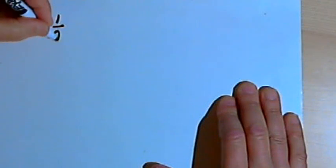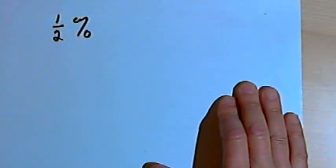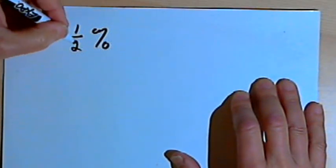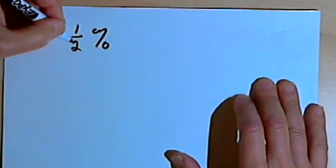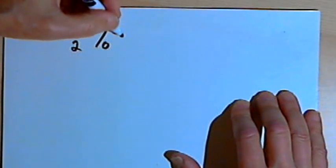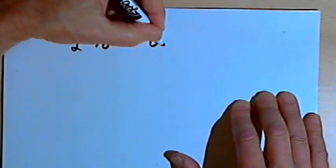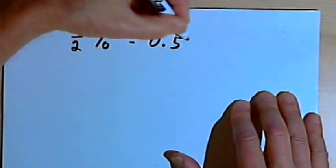I might have a percent with a fraction in it. I could have something like one-half percent. So to deal with that, the first thing I'm going to do is take that one-half and turn it into a decimal. So instead of one-half percent, I'm going to write 0.5 percent, because one-half is the same as 0.5.